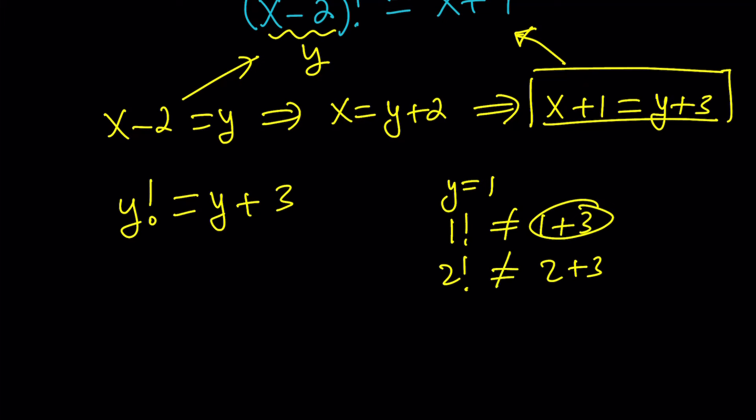3 factorial, 4 factorial, so on and so forth. What happens is, factorials grow much faster than linear functions. Therefore, this guy is going to catch up real quick. So it's not going to take too long. Make sense?